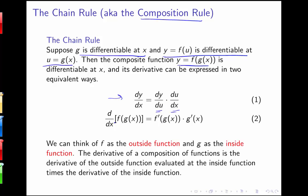Another way to notate this rule is to think about the derivative with respect to x of f of g of x as f prime of g of x — the derivative of the outside function evaluated at the inside function — times the derivative of the inside function. So the chain rule always has these two pieces, and a very common error is to just do the first piece. We have to be very careful and remember to also multiply by the derivative of that inside function.